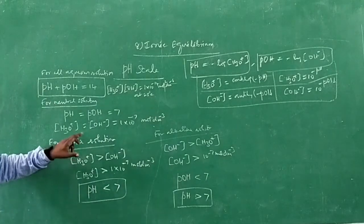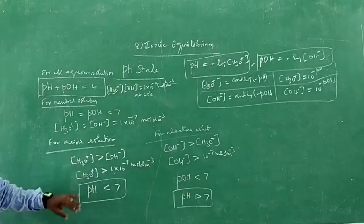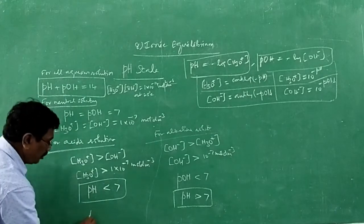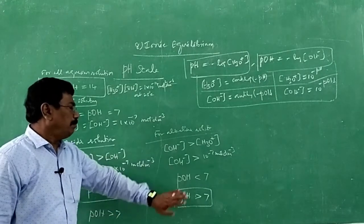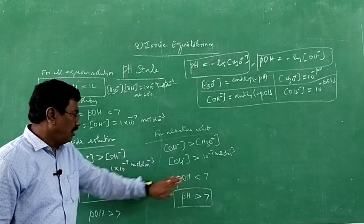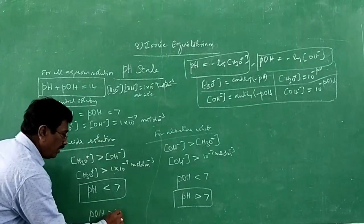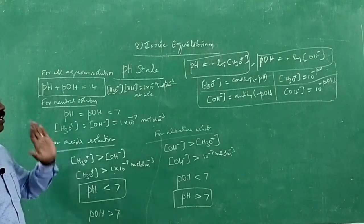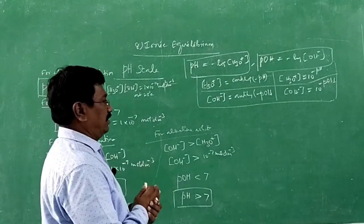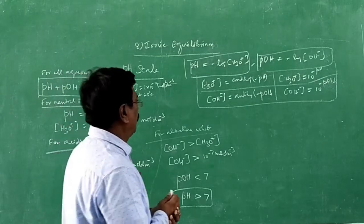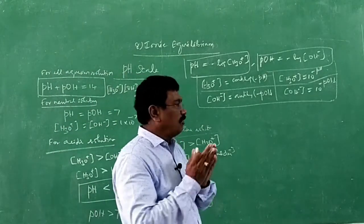To summarize: for acidic solution, pH is less than 7; for alkaline solution, pH is greater than 7. In terms of pOH, for acidic solution pOH > 7, for alkaline solution pOH < 7. We usually speak in terms of pH only. Most common acidic solutions are listed, including a few acids.